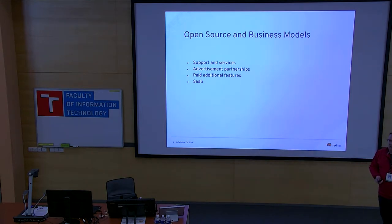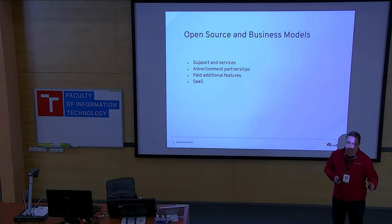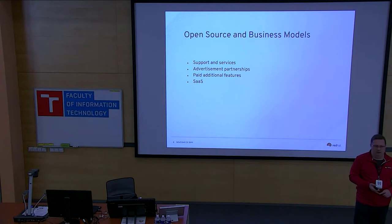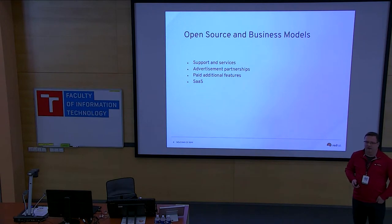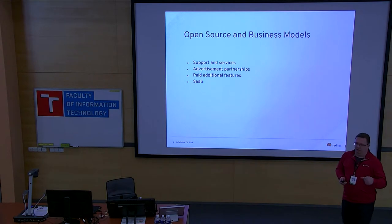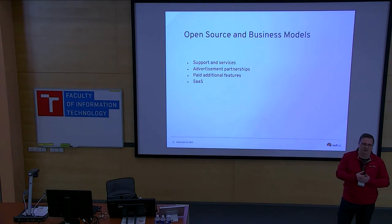The third one is paid additional features. A lot of companies do this — you provide the core of the software as open source, and then features that are interesting for enterprises you actually charge for. This is, for example, how MySQL gets funded. All the distributed database stuff you can get for free, but there is some conflict because by open-sourcing just part of the product, you can get into conflict with communities — people may contribute features that are part of your proprietary offering, and there can be bad clashes between the community and the company.